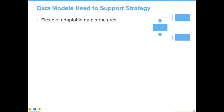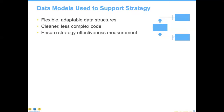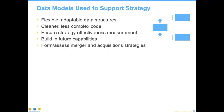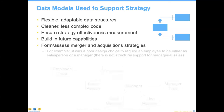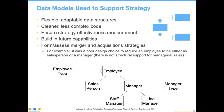Data models are also used to support strategy in the same way as architecture supports strategy. The more flexible and adaptable your data structures are, the cleaner and less complex code can be created. These give you the ability to understand merger and acquisition targets — something left off so many times. If you've got a million customers and they've got a million customers and one set of systems, you can actually evaluate that merger using the data model.